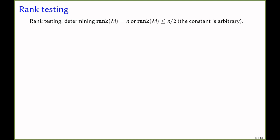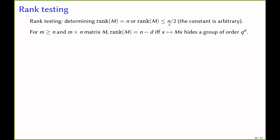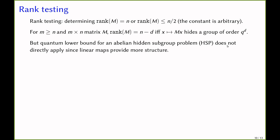Next, we show that for rank testing the lower bound is linear in the dimension of the matrix. The problem is: given access to a matrix M through matrix-vector products, identify whether the matrix is full rank or has rank at most n/2. An observation is that for tall matrices — where there are more rows than columns — the rank deficit equals d if and only if the linear map hides a subgroup of order q to the d. Note that a quantum lower bound for the abelian hidden subgroup problem does not directly apply, since linear maps provide more structure to this problem.